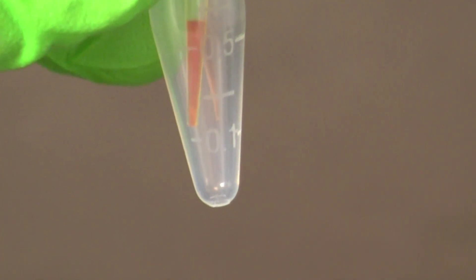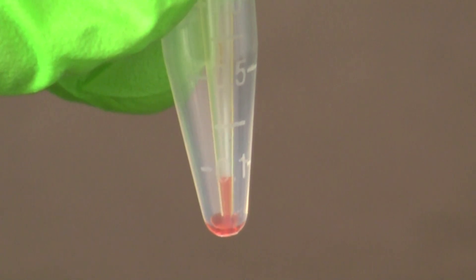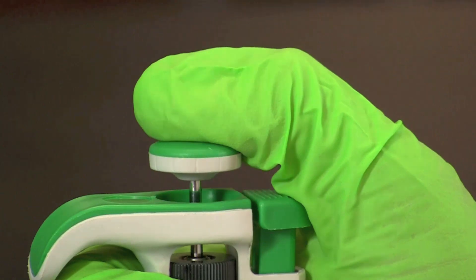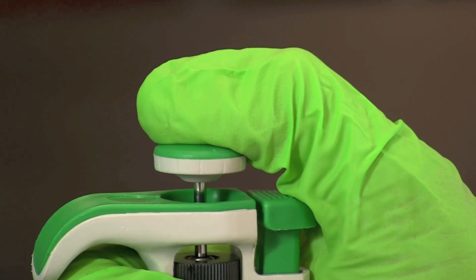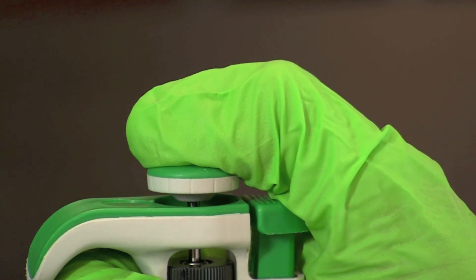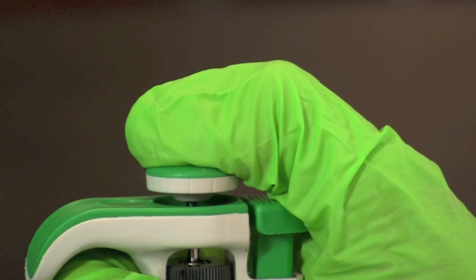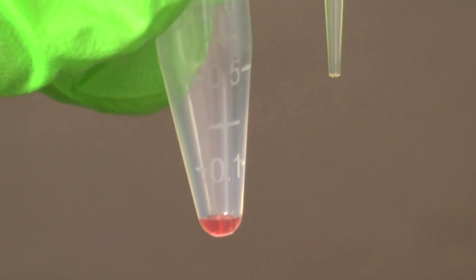To complete the transfer of a sample place the micropipette tip into a fresh microtube. Slowly depress the plunger button pausing at the first stop. Then continue depressing until the second stop. Now while holding the plunger button down remove the micropipette tip from the microtube. Once out of the microtube you can release the plunger button.